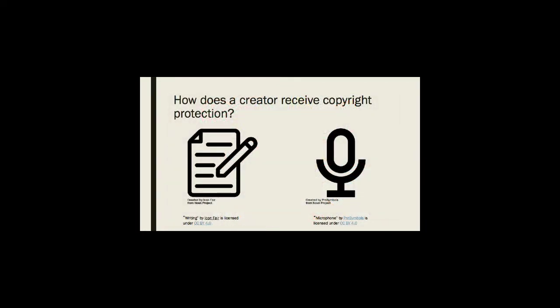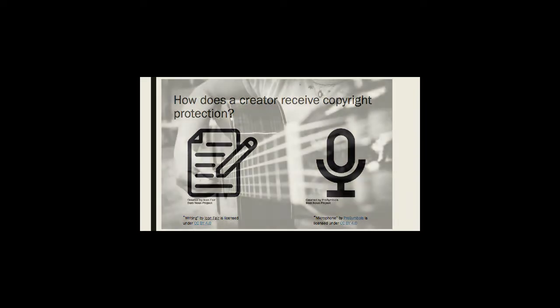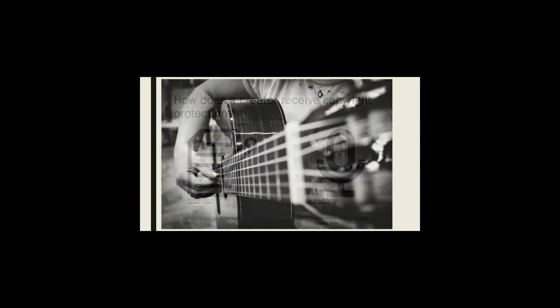A copyright officially exists on a work as soon as the work exists in a tangible form, meaning it has to be written down or otherwise recorded by the creator. It could be a poem on the back of a napkin or a drawing created using an app on a smartphone. Let's say, however, that the creator — let's say it's you — played a few bars of a new song you were working on on your guitar.